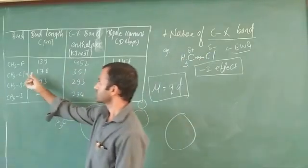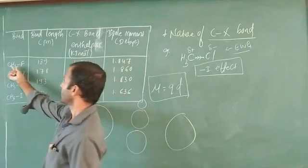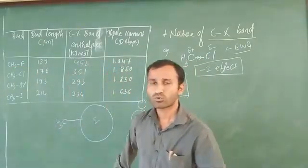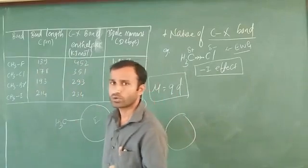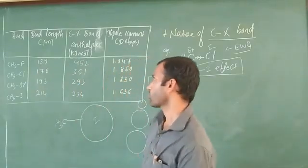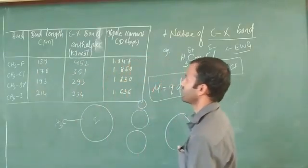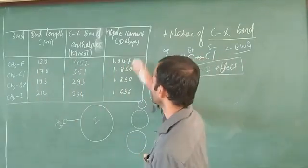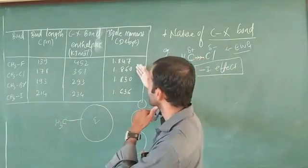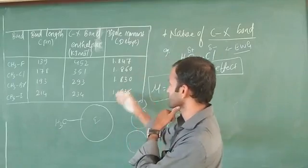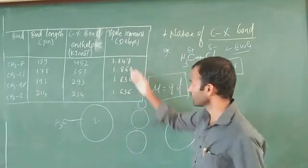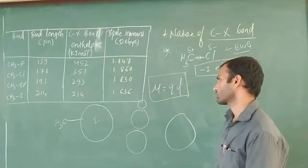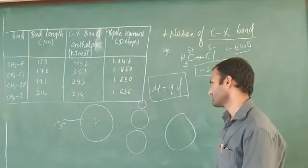When bond length is less, bond enthalpy is more. Bond enthalpy means the amount of energy required to break a bond. For the dipole moments going down the group: CH3F is 1.847, CH3Cl is 1.860, CH3Br is 1.830, and CH3I is 1.636 D.